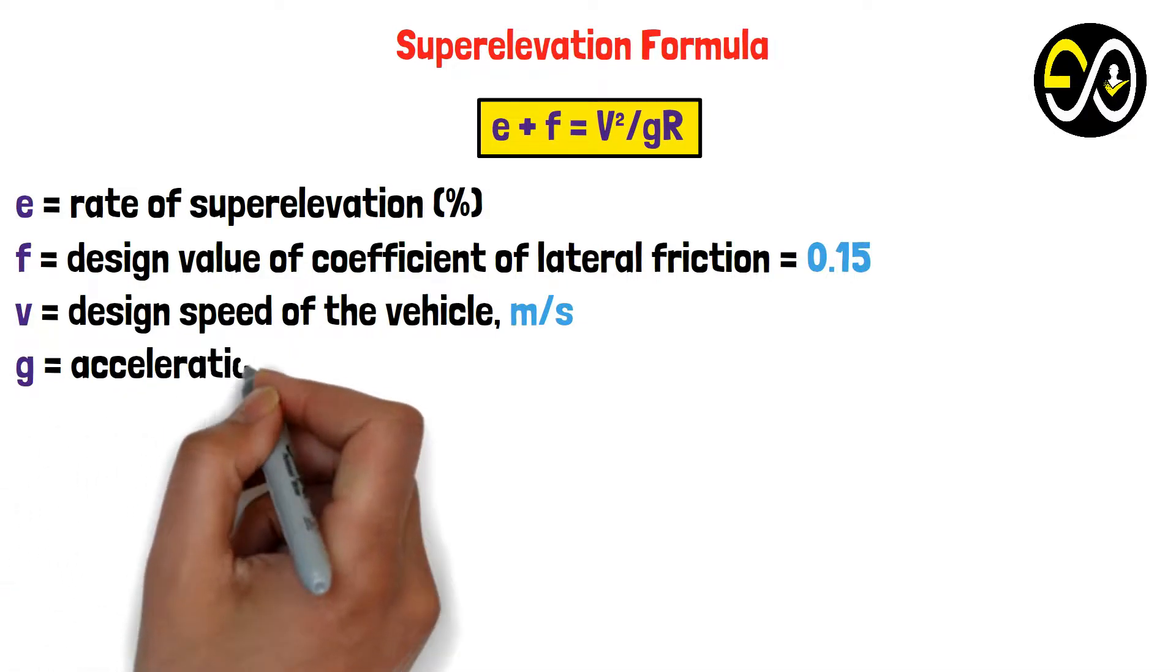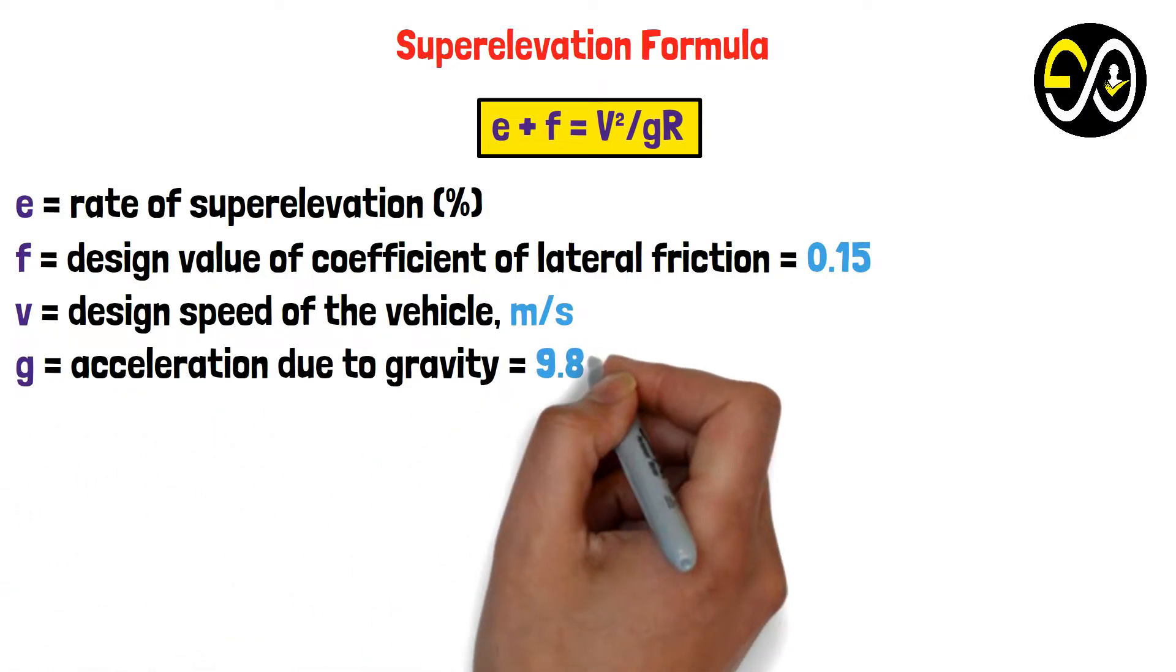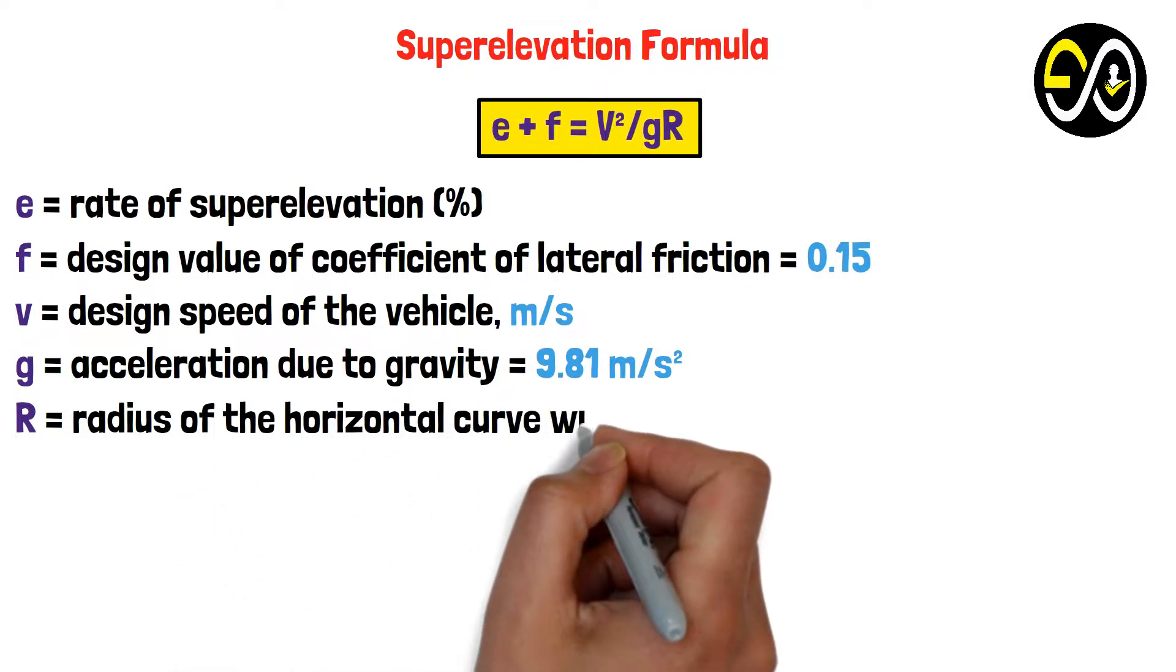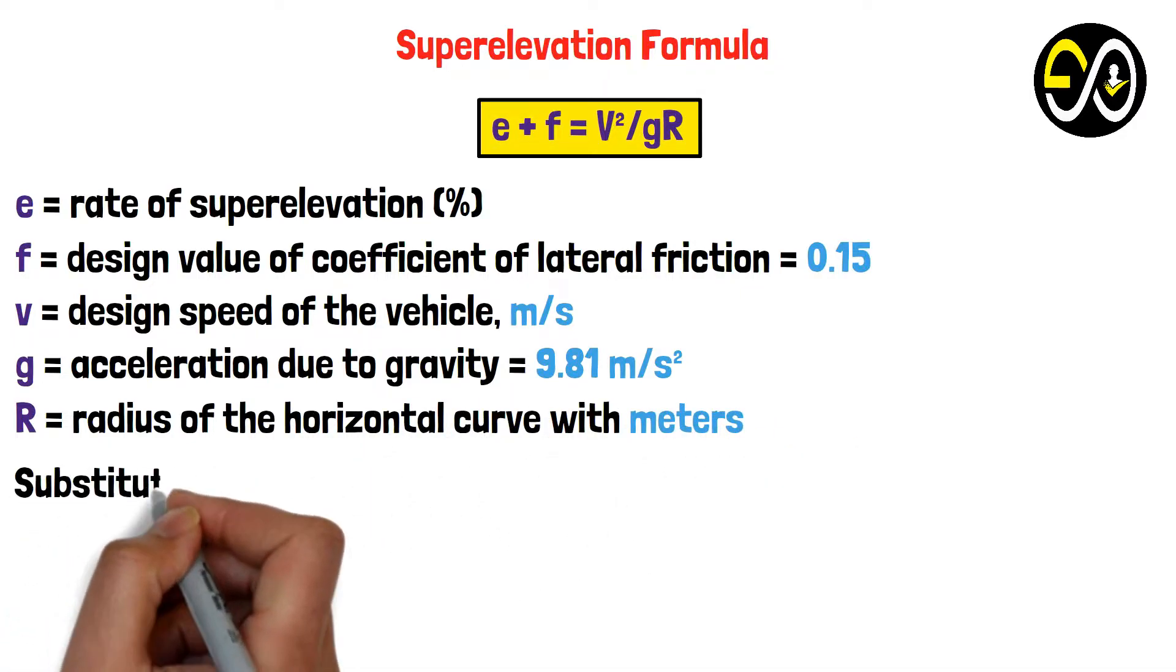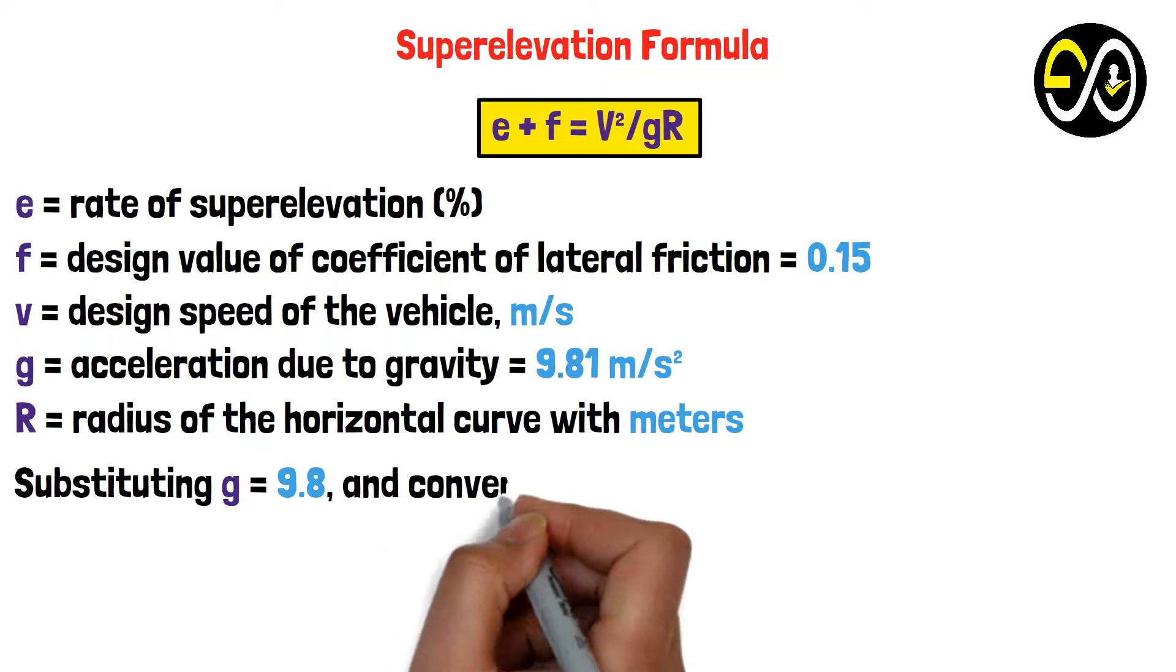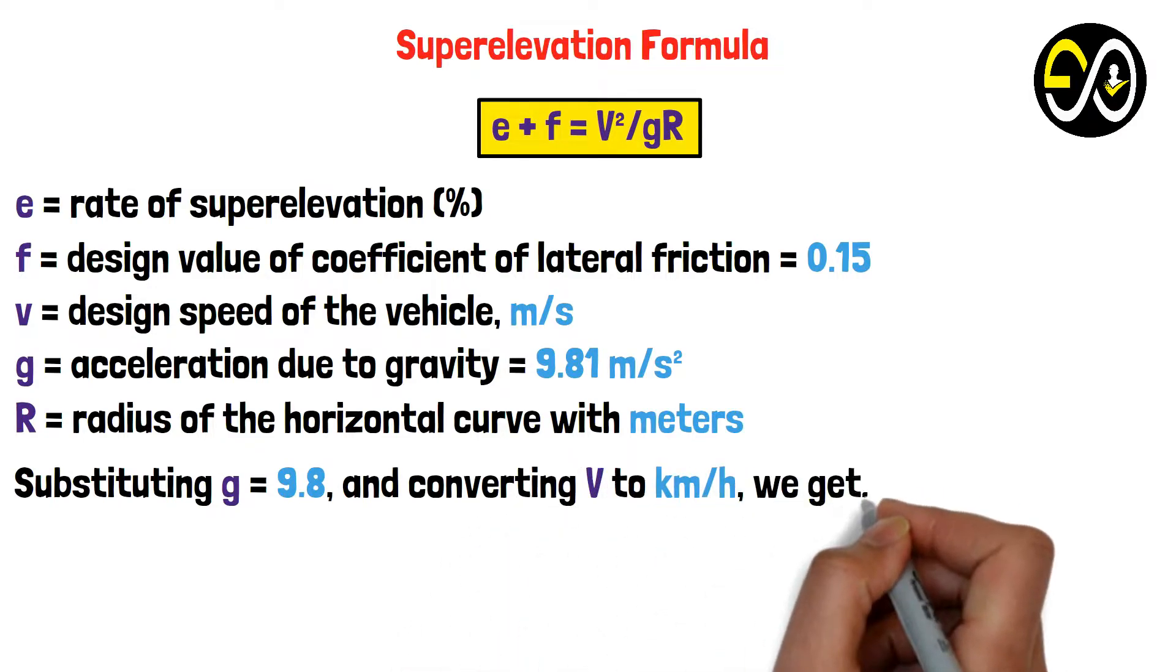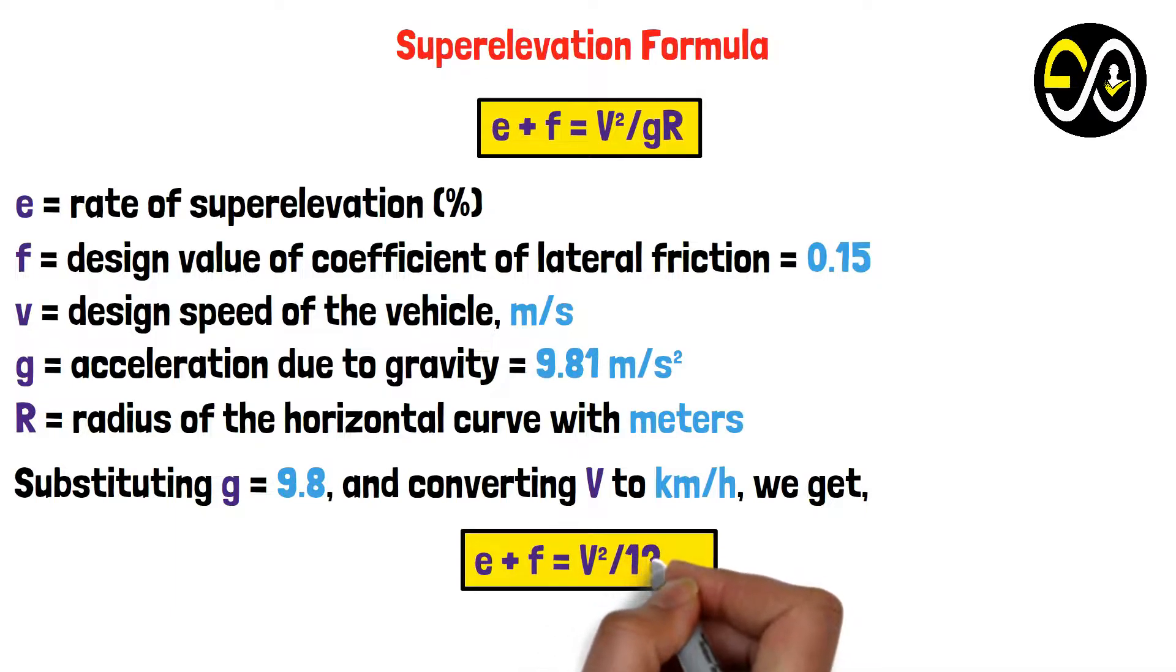g equals acceleration due to gravity equals 9.81 m/s², R equals radius of the horizontal curve in meters. Substituting g = 9.8 and converting V to kilometers per hour, we get e + f = V²/127R.